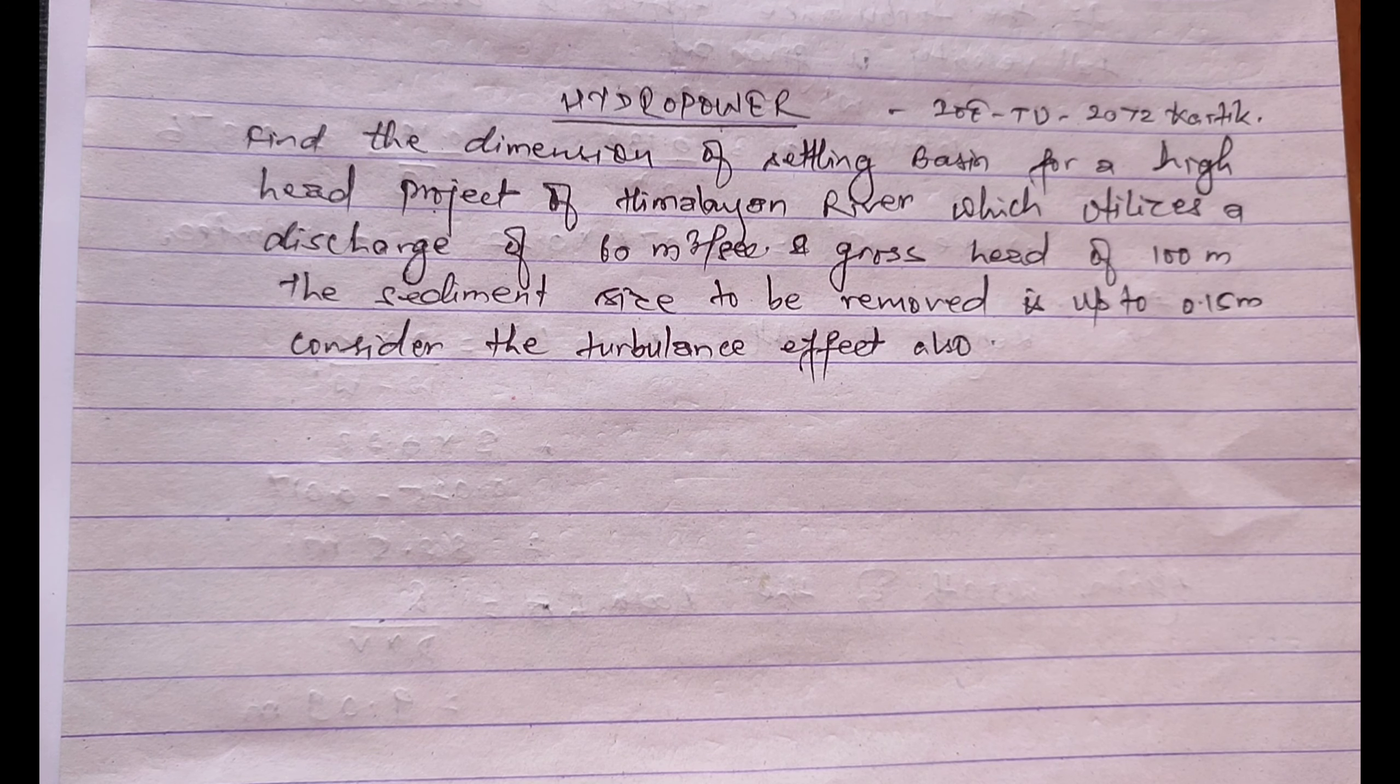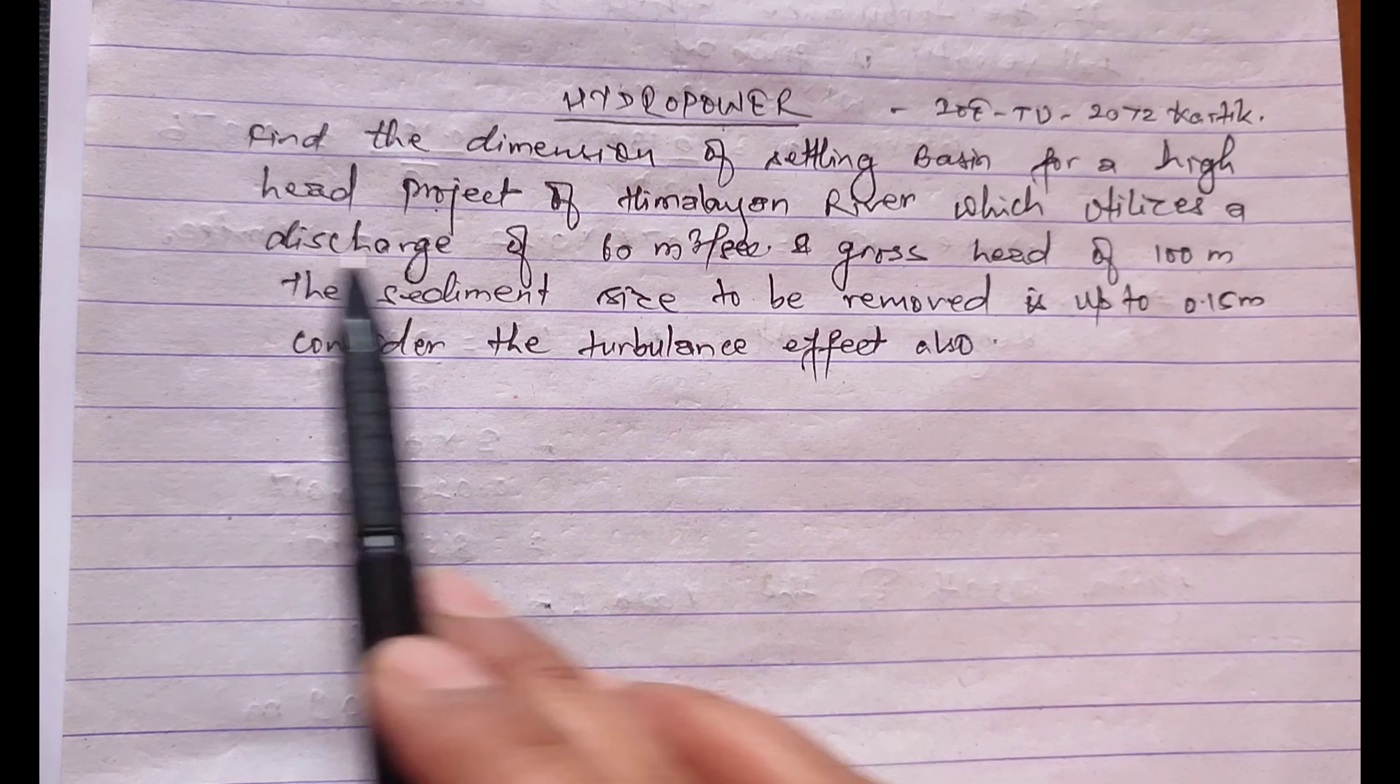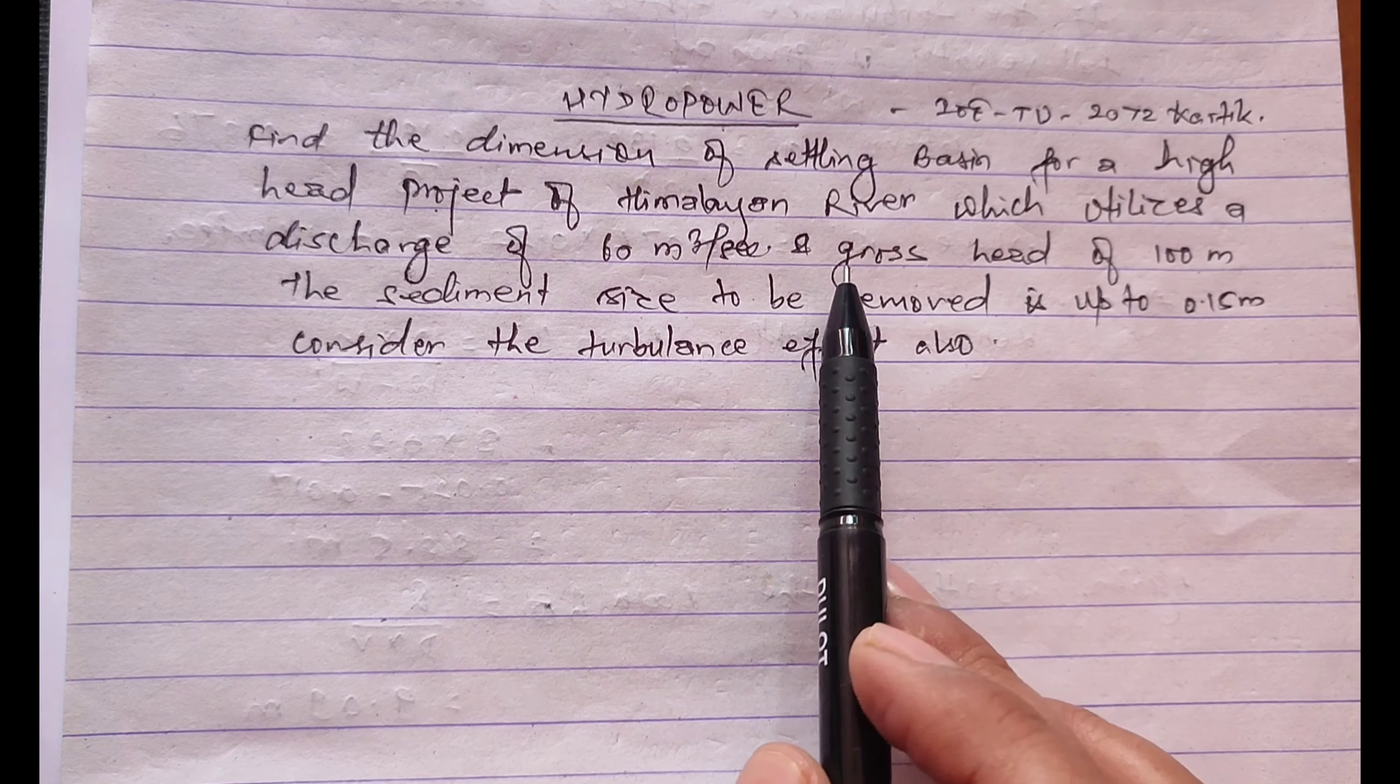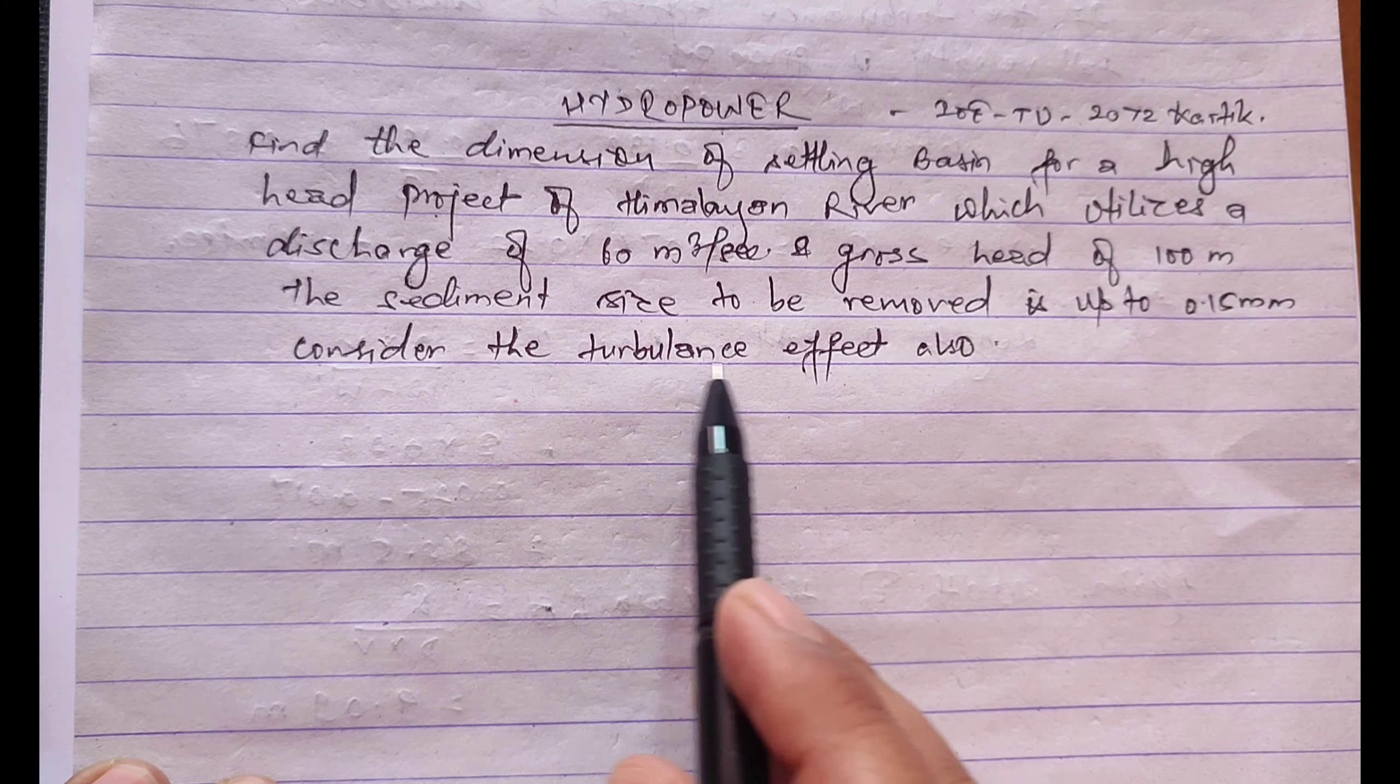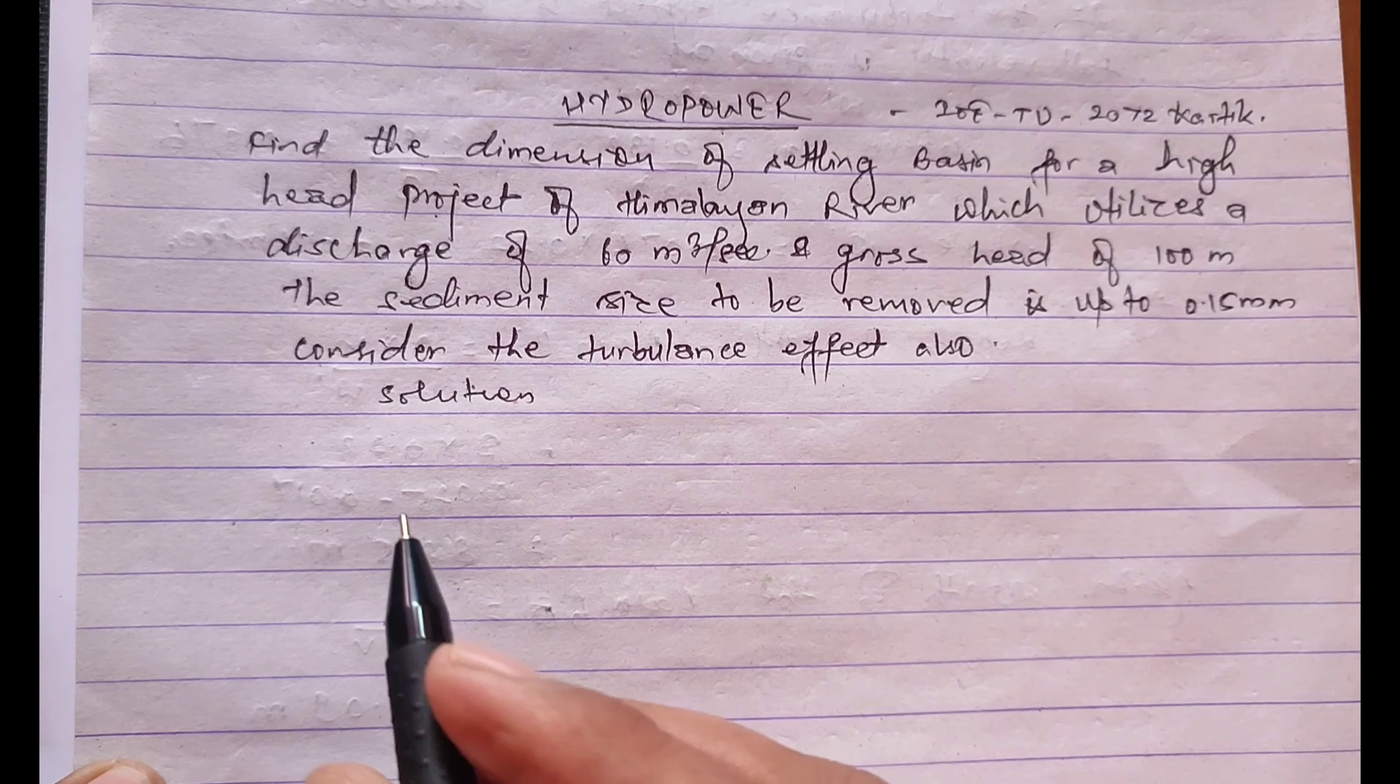Hello everyone, welcome to our channel. Today in this lecture we are going to solve a numerical problem related to settling basin. The given question is: find the dimension of settling basin for a high head project of Himalayan river which utilizes a discharge of 60 meter cube per second and gross head of 100 meter. The sediment size to be removed is up to 0.15 mm and consider the turbulence effect also. So let's start solving this.